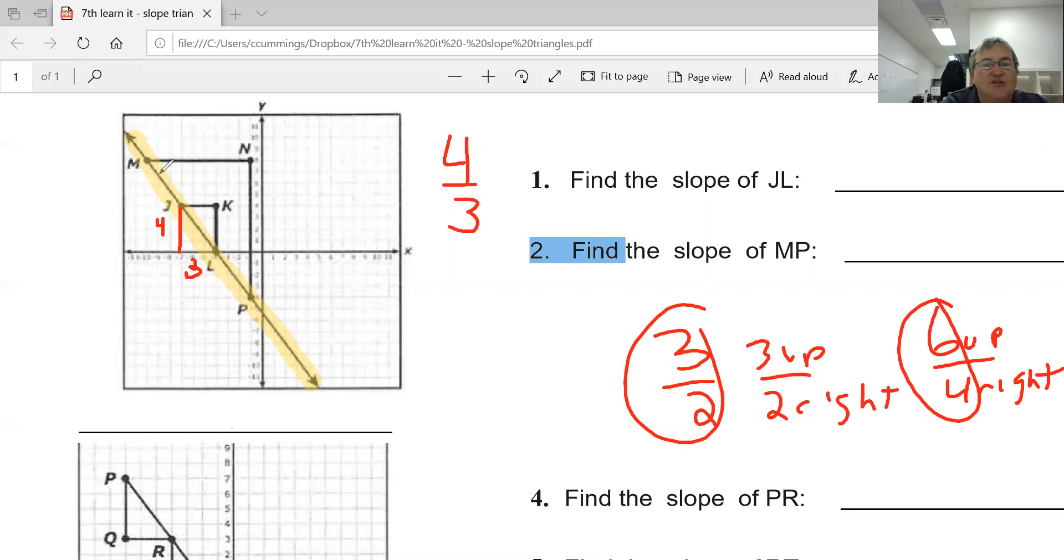If you do the slope of MP, you're going from this point here and you're going 12, and then over here, which is 9. And so it would be 12 over 9, but if you simplify 12 over 9, it's still 4 over 3. And so your slopes are the same. So this is called using similar triangles to calculate slope.